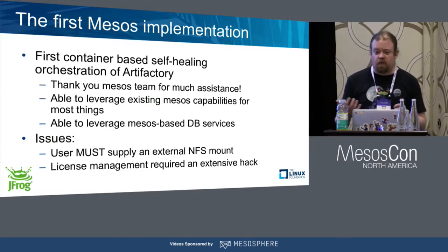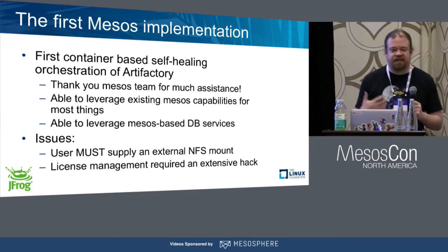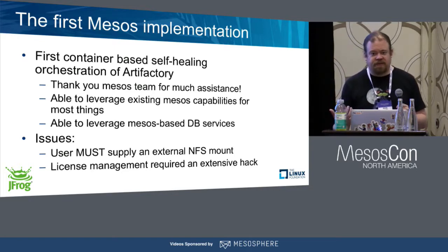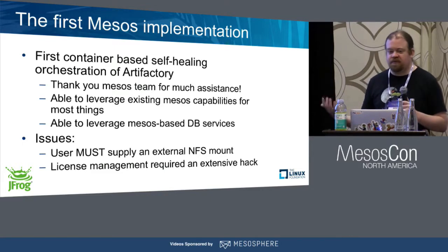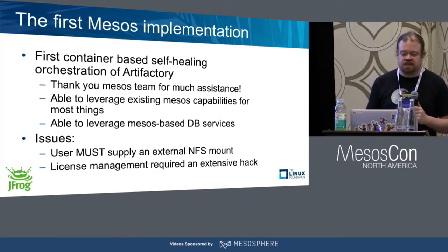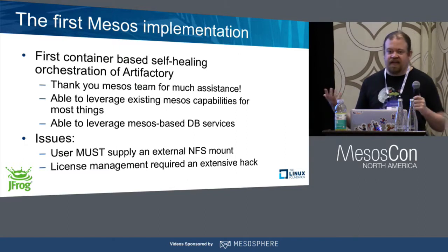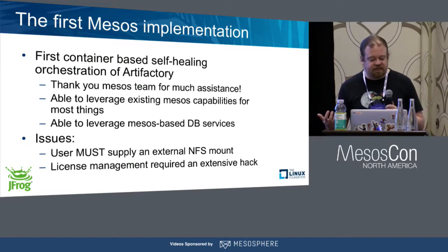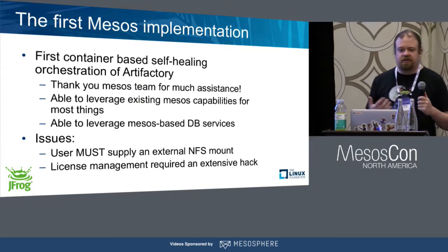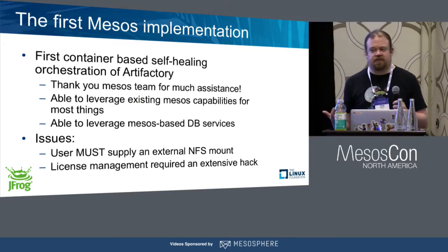Anyone who wanted to do HA basically had to take our default image and build on top of it, which is what we did for our first Mesos implementation. Mesos was the first platform where we attempted to deploy containerized Artifactory through orchestration with self-healing. We'd done it before with VM orchestration tools, but Mesos really took it to the next level, where you have to get much more serious about being cattle instead of pets. Thank you to the Mesosphere team for assisting us with that.